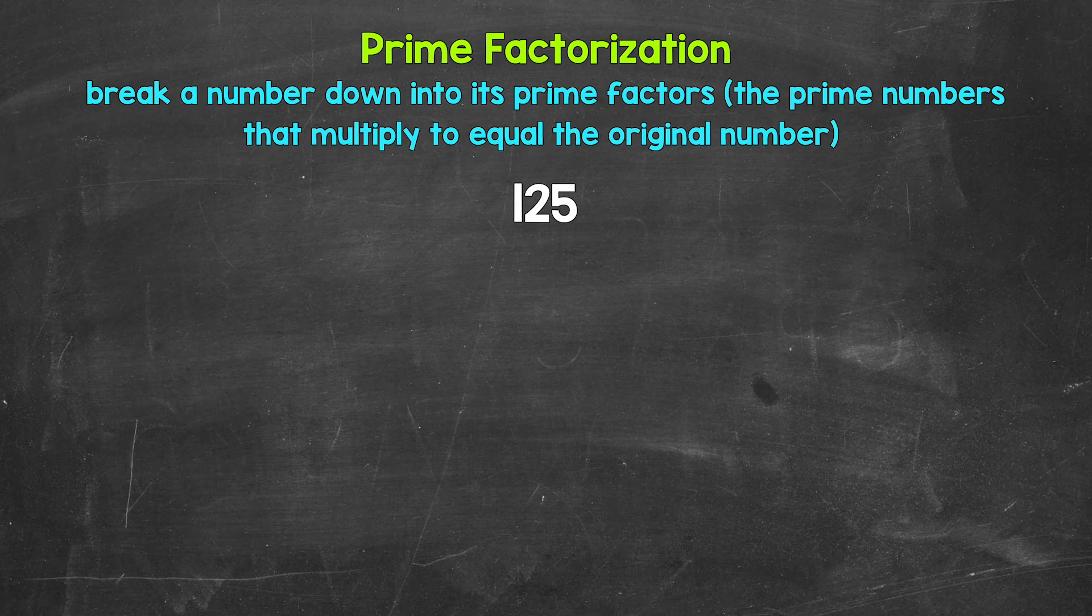So we are breaking 125 down into its prime factors, the prime numbers that multiply to equal 125. So taking a look at 125, we need to start breaking this down by thinking of two factors, two numbers that multiply to give us 125.